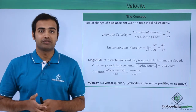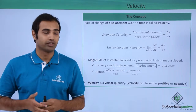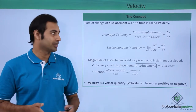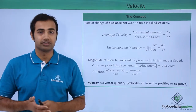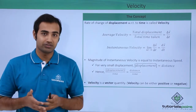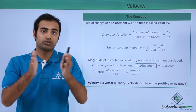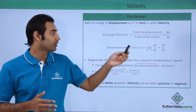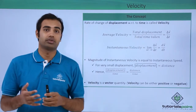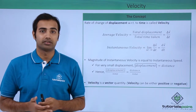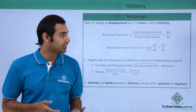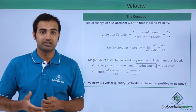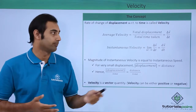There are two kinds of velocity that we usually define. The first one is average velocity and the second is instantaneous velocity. Average velocity is defined over a course of time or over a large change of time, and the formula is total displacement upon total time taken. It's also represented by delta x vector by delta t, where delta x vector is a change in displacement and delta t is a change in time.